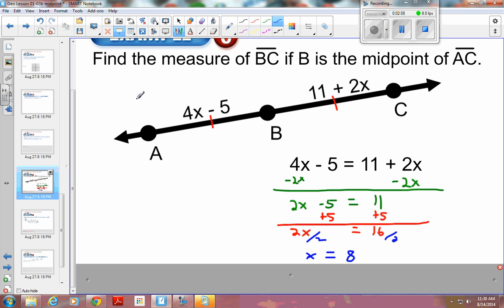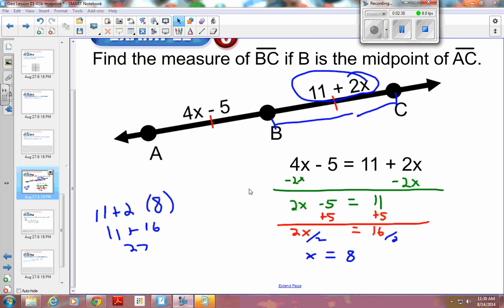And you end up with X is equal to 8. Once you have X equals 8, it says find the measure of BC. BC is from B all the way to C, so it's this one right here. We have X, so we can fill X in. That would be 11 plus 2 times 8, and so 11 plus 16 would be 27. It doesn't have any units on it, so we can use naked numbers in this case. So final answer is the measure of BC is equal to 27.